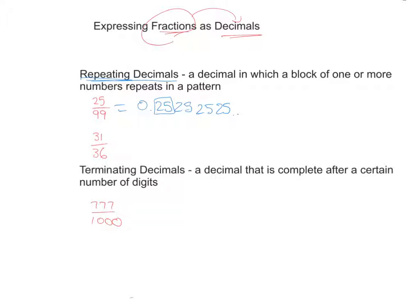This 25 is repeating over and over again. So what we would do quite often is we'd write this as 0 decimal 25, and then we'd put this bar across the top, this line across the top, to tell the person that the 25 repeats over and over again. I'll give you one more example of this.